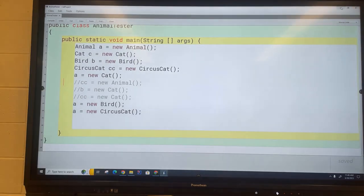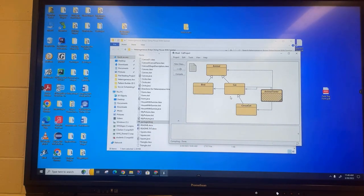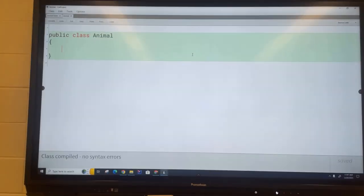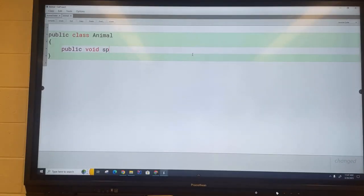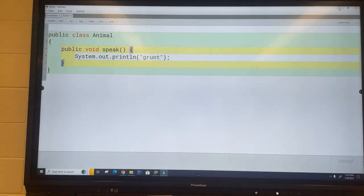So let me show you that. Let's go back to our BlueJ here for a second and I'm going to introduce a speak method here. So I'm going to say public void speak and then in here in the other classes in the bird I'm going to override that method and I'm going to override it in some of these other methods also.